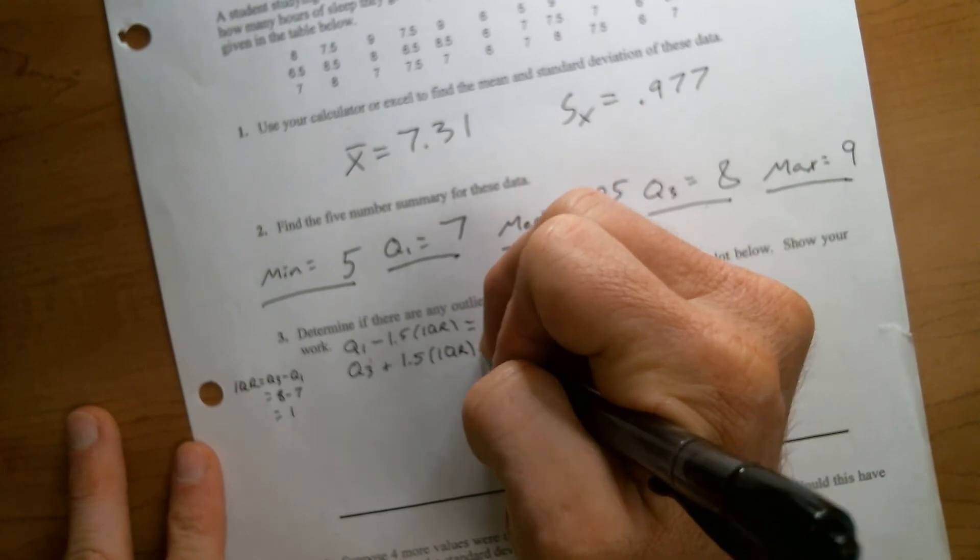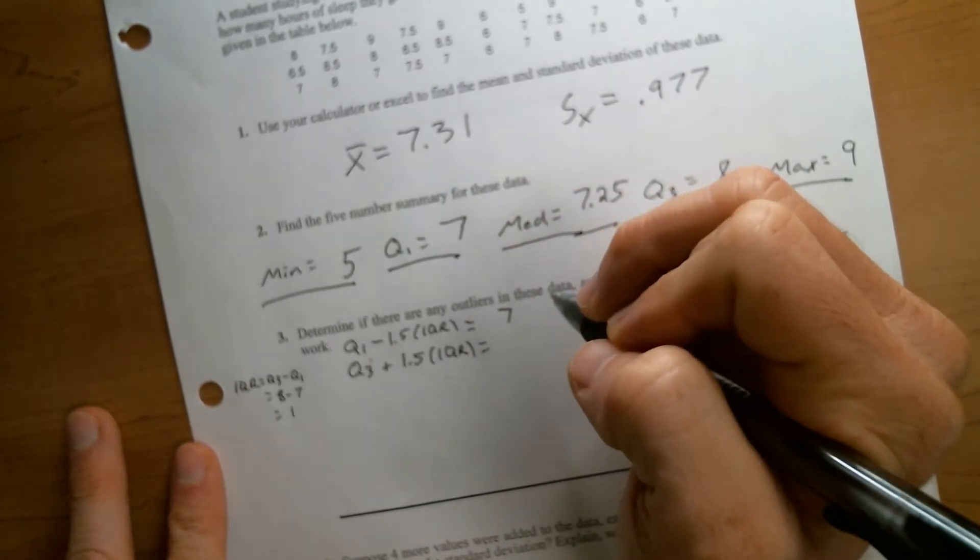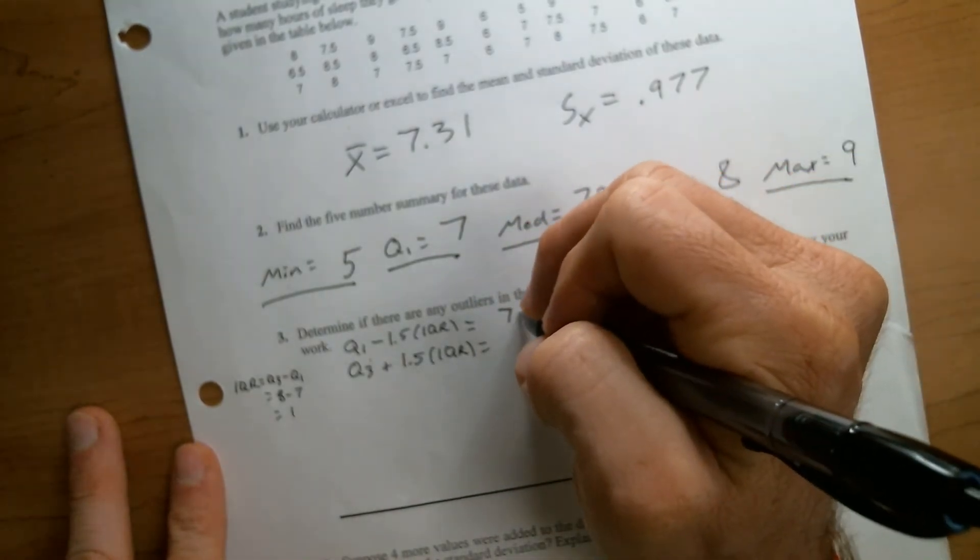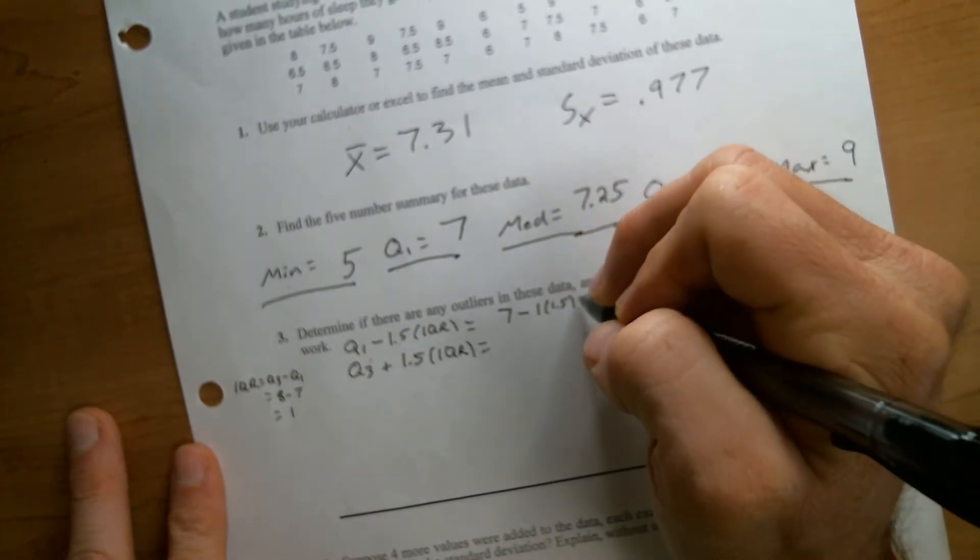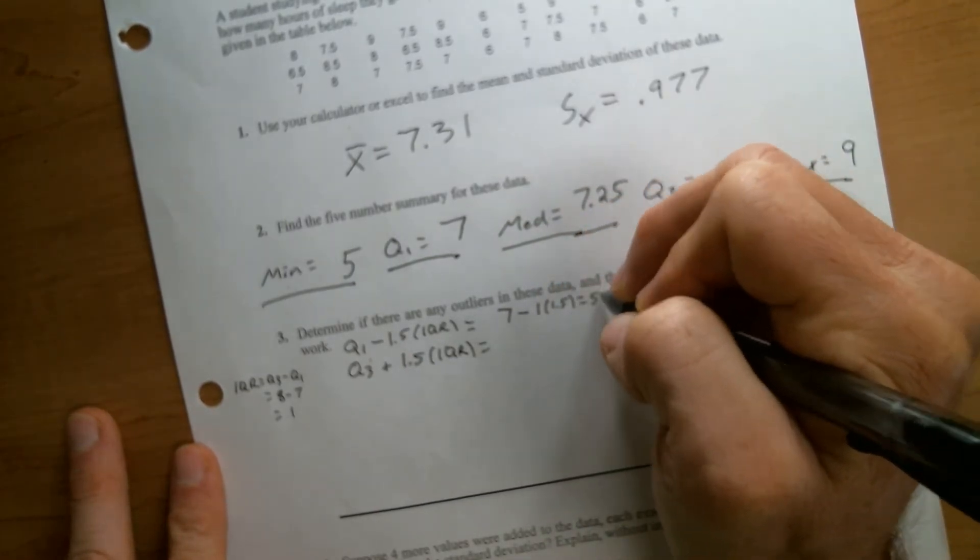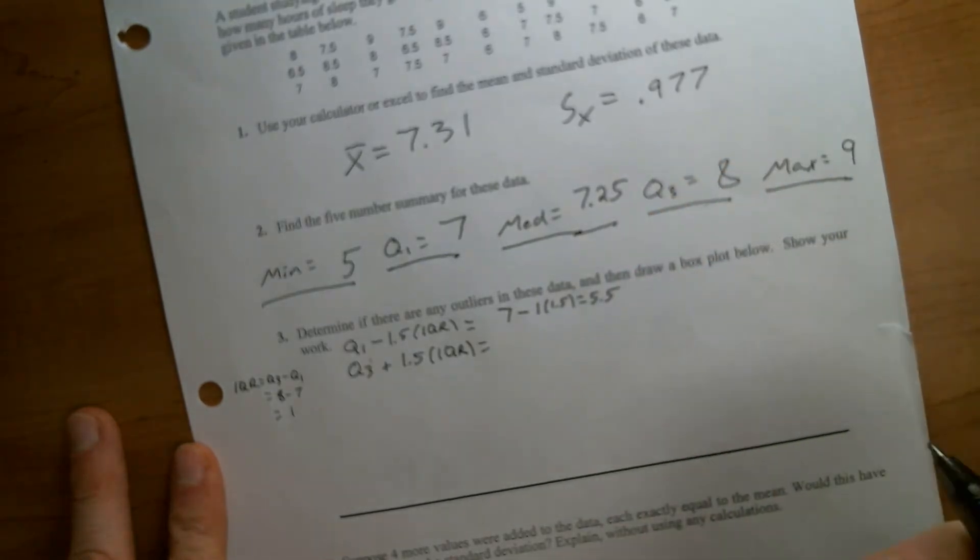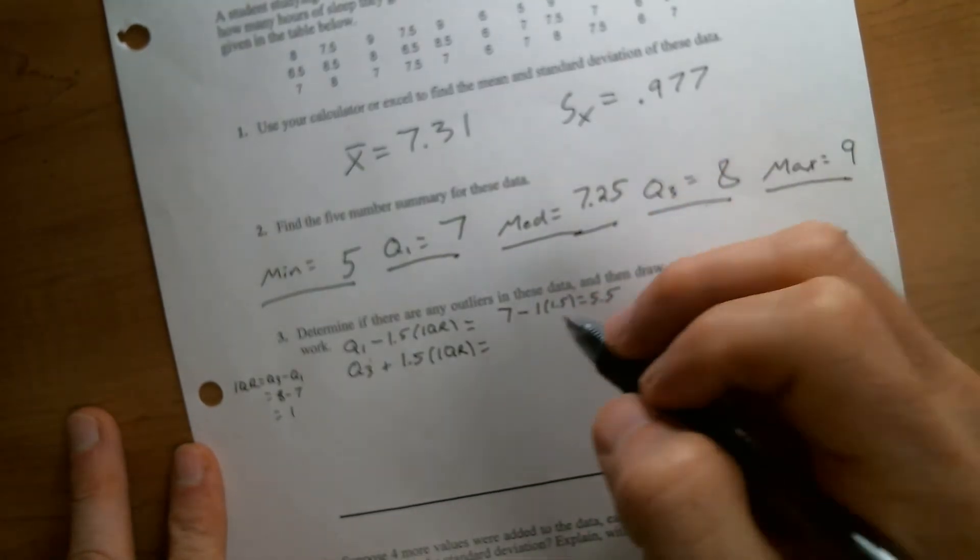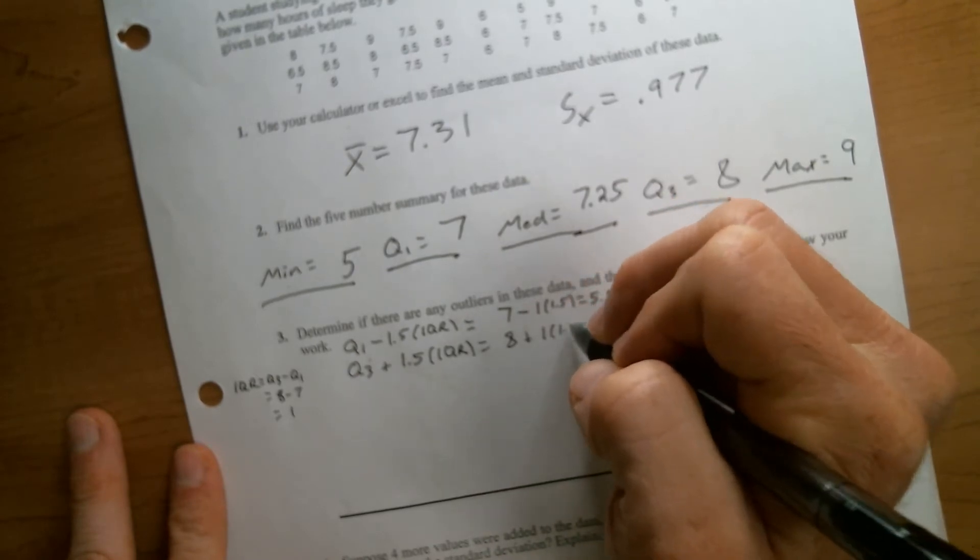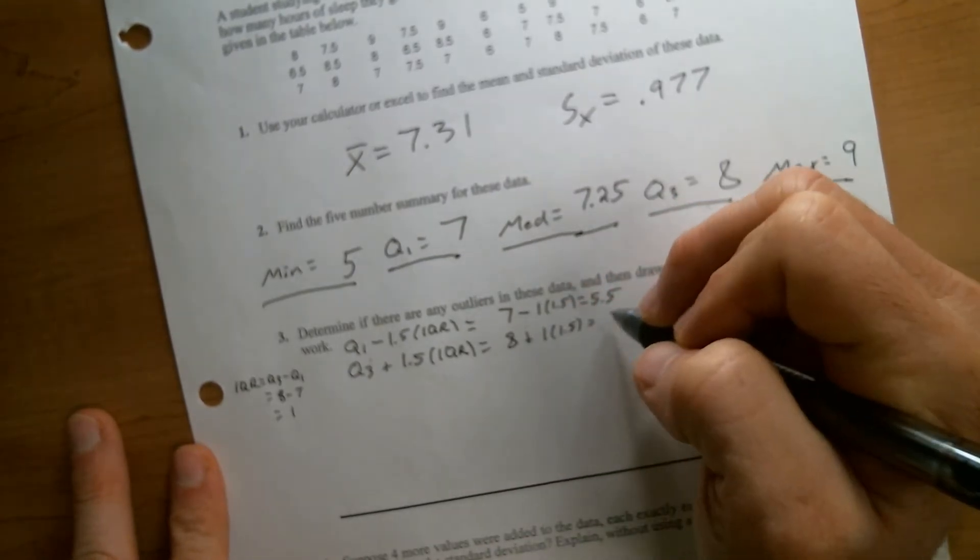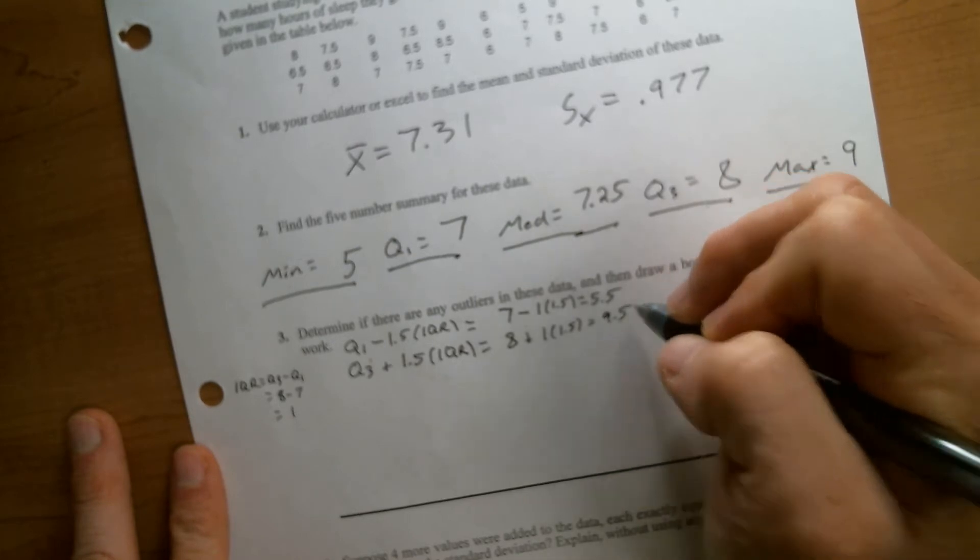So our IQR is 1, which is going to make it pretty easy. So Q1 was 7. If we subtract 1 times 1.5, that gives us 5.5. Q3 was 8, so if we do 8 plus 1 times 1.5, that gives us 9.5.